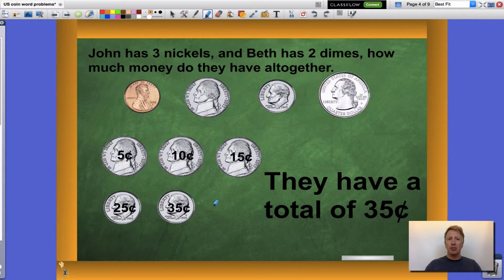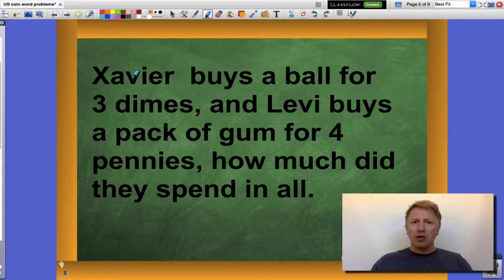Let's look at another problem. This is getting easy. All right, read along with me. Xavier buys a ball for three dimes and Levi buys a pack of gum for four pennies. How much did they spend in all? Again, before I start, are there any signal words that let me know what I should be doing? You guessed it. In all. In all lets me know that I am combining Xavier's dimes with Levi's pennies.